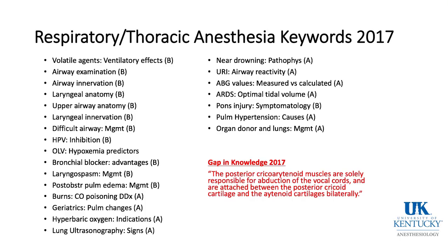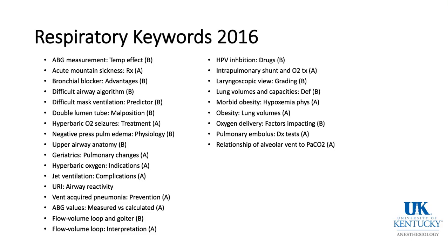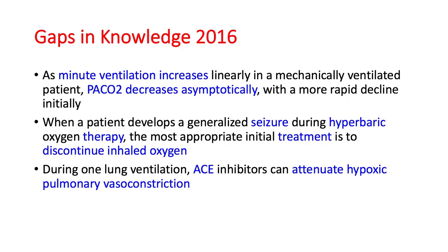In 2016, respiratory keywords are listed here. 'B' stands for basic content, 'A' stands for advanced content, and these will be used throughout Parts 1 through 3. The gaps in knowledge in 2016 — questions that more than 50% of exam takers missed — include: as minute ventilation increases linearly in a mechanically ventilated patient, alveolar CO2 decreases asymptotically with a more rapid decline initially. For example, going from 5 to 7–8 liters per minute has a larger effect than going from 15 to 20 liters per minute, as PACO2 decreases asymptotically toward zero.